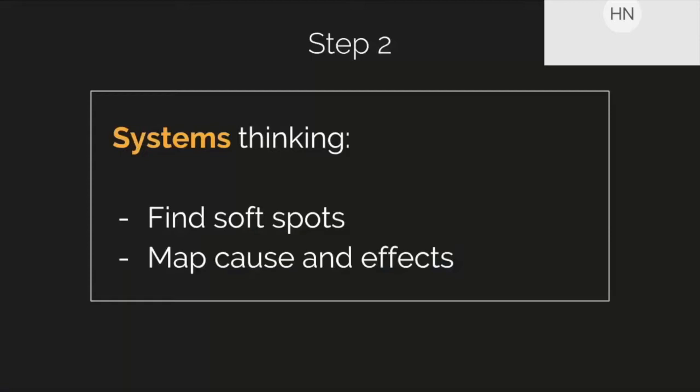This led me to the systems thinking portion of scaling out UX research — really looking at the whole network of folks involved in this large and complex organization and thinking about what were the soft spots, or intervention points, where we can make the biggest impact that will ripple out. Then mapping cause and effect: identifying the relationships and connections that help maintain the system, and thinking about which lever for change will be most impactful when scaling it up.